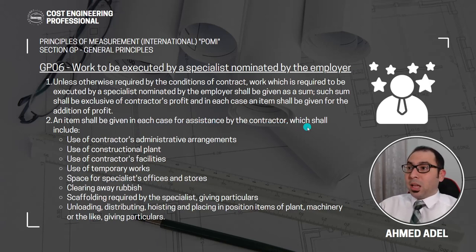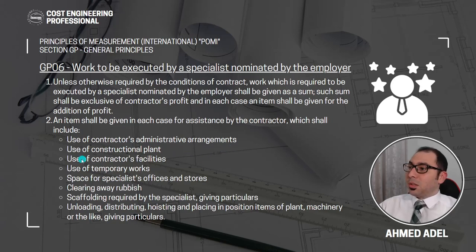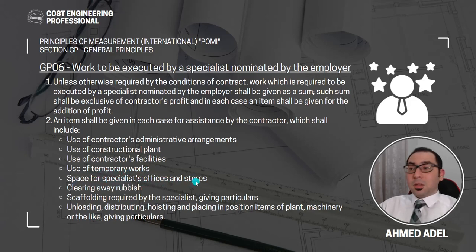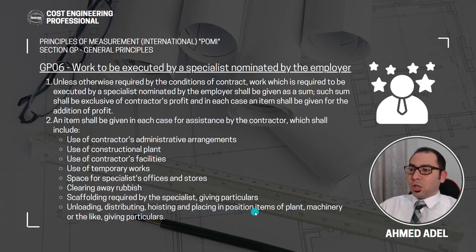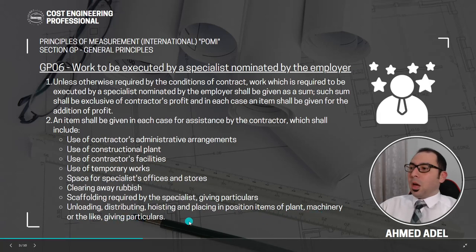What assistance is required by the contractor? It includes: use of contractor's administrative arrangements, use of constructional plant, use of contractor's facilities, use of temporary works, space for specialist's office and stores, clearing away rubbish, scaffolding required by the specialist, giving particulars, unloading, distributing, hoisting and placing in position items of plant, machinery or the like.